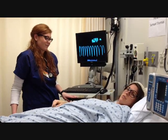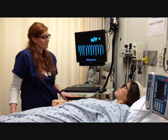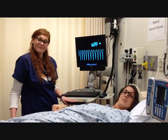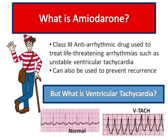What is amiodarone? Amiodarone is a class 3 antiarrhythmic drug. It is most often used to treat ventricular tachycardia. What is ventricular tachycardia? Well, ventricular tachycardia, or VTAC, is an irregular rapid heart rate originating from one of your ventricles in your heart.